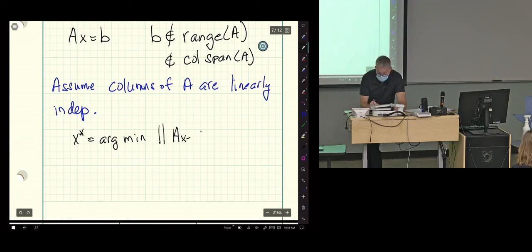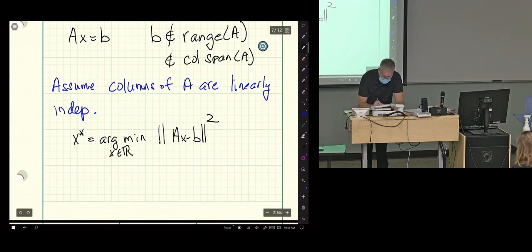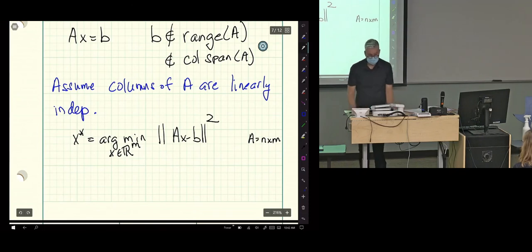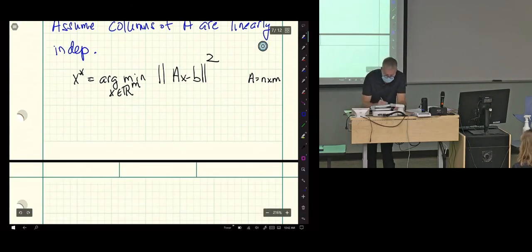And then we have this fancy notation, X star equals arg min, and then we try to minimize the error. And people call it least squares because we get rid of the square root by squaring the norm. So this was X, an element of R^M. A is N by M. And remember, our result was X star is equal to A transpose A inverse A transpose B.